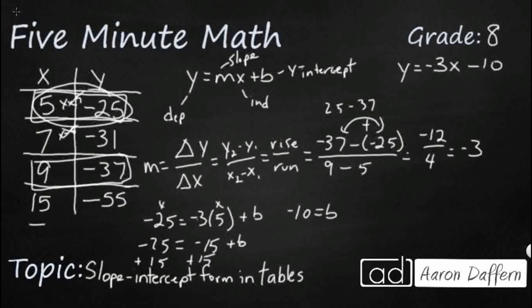Let's try it with this final one just to make sure it really works. So y equals negative 55 equals the slope, which is negative 3, x is 15. My y-intercept is negative 10. Does that work? Yes, it does. And that's how you find it.